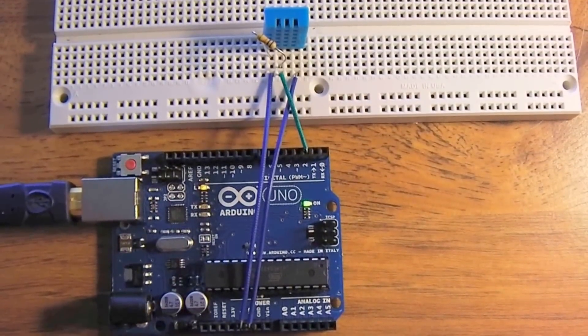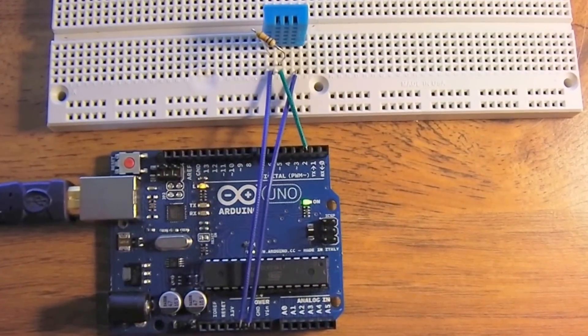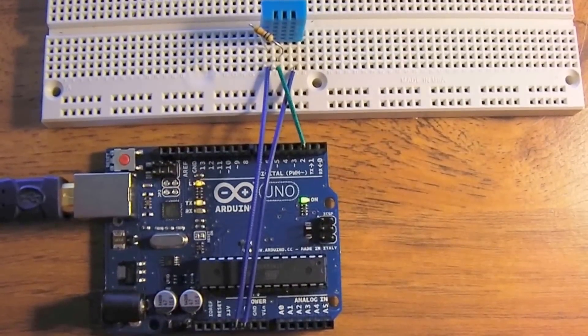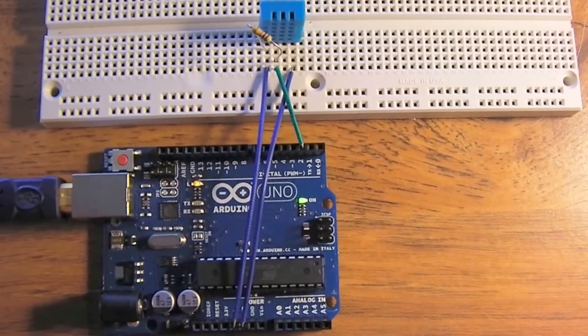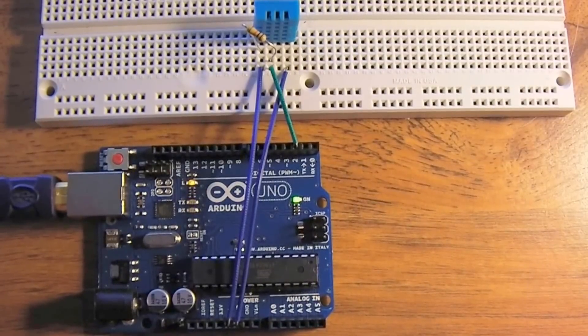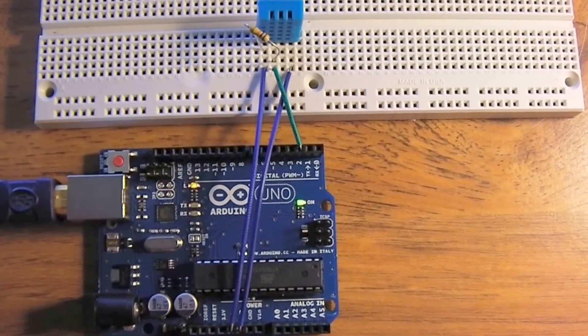This is a tutorial on how you would set up a DHT11 or DHT22 sensor to an Arduino. In this case, I've got the DHT11, which is blue, but you could use the same method to set up the DHT22, which is the white one.